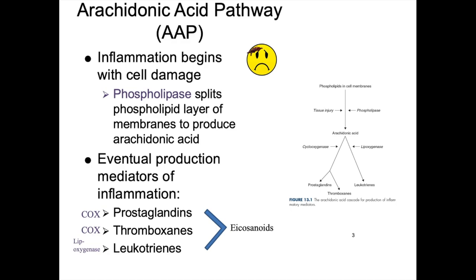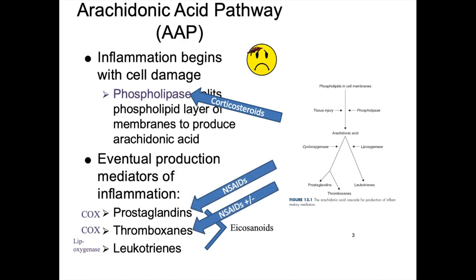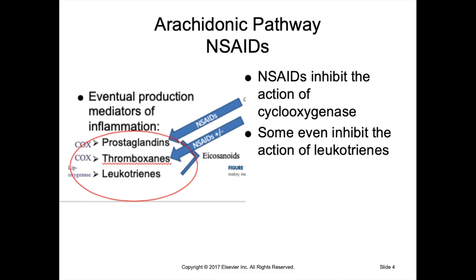Corticosteroids, specifically glucocorticoids, prevent inflammation by blocking the cleaving of phospholipase from the phospholipid membrane. NSAIDs work through COX inhibition of prostaglandins, and some also influence thromboxane creation. We're going to focus on NSAIDs as they inhibit cyclooxygenase (COX). Some NSAIDs also inhibit leukotrienes, but that's not their main mode of action.